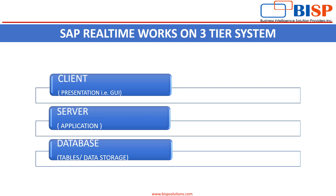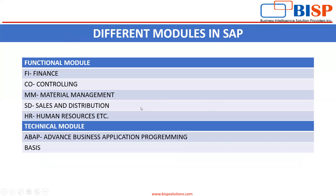There are approximately 69 plus modules in SAP, differentiated into two categories: functional modules and technical modules. Examples of functional modules include Finance, Controlling, Material Management, Sales and Distribution, and Human Resources. Technical modules include ABAP — that is Advanced Business Application Programming — and Basis. In our entire video series, we shall be focusing on FICO, that is Finance and Controlling.